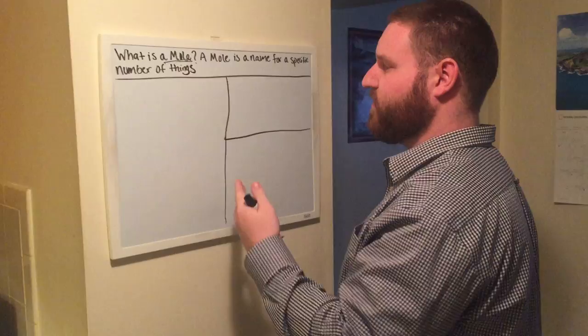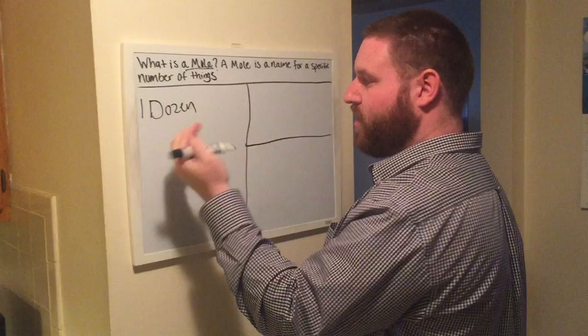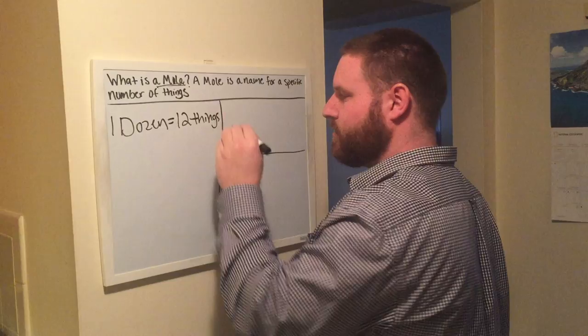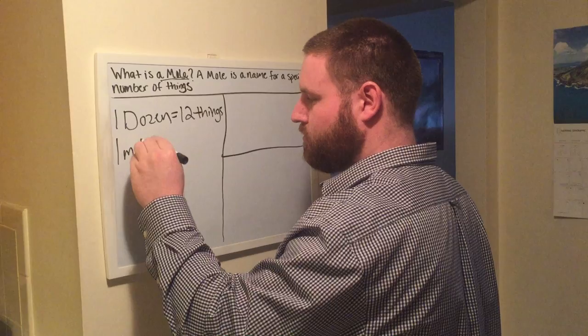What is a mole? Well, a mole is a name for a specific number of things, like one dozen. One dozen of anything is equal to twelve of anything, or twelve things. So one dozen is equal to twelve things.